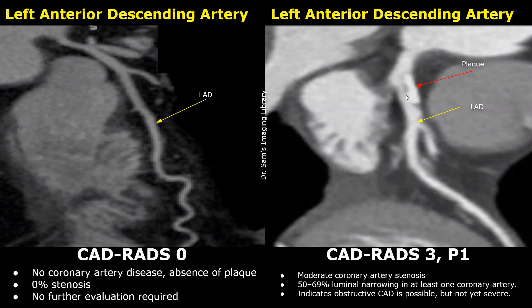On the left is an image of a normal left anterior descending artery. No hypodense or hyperdense plaque is seen in its lumen. On the right is an image showing a hyperdense calcified plaque which causes a stenosis of approximately more than 50%. More than half of the lumen is narrowed due to this plaque.